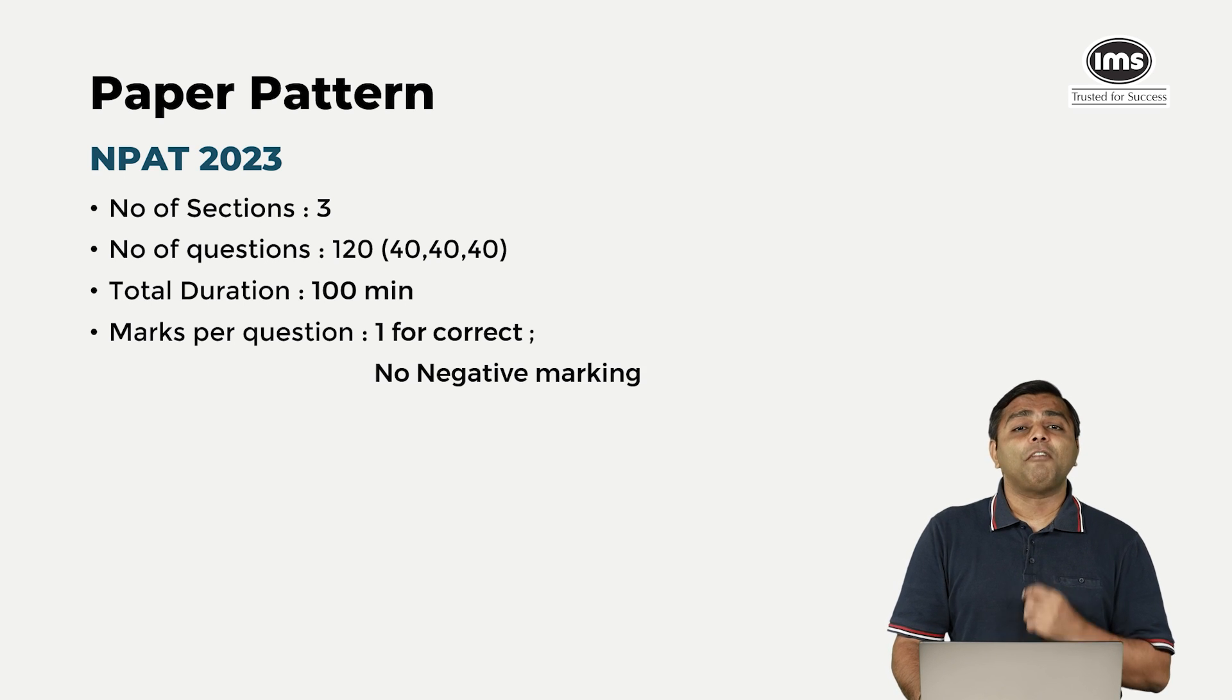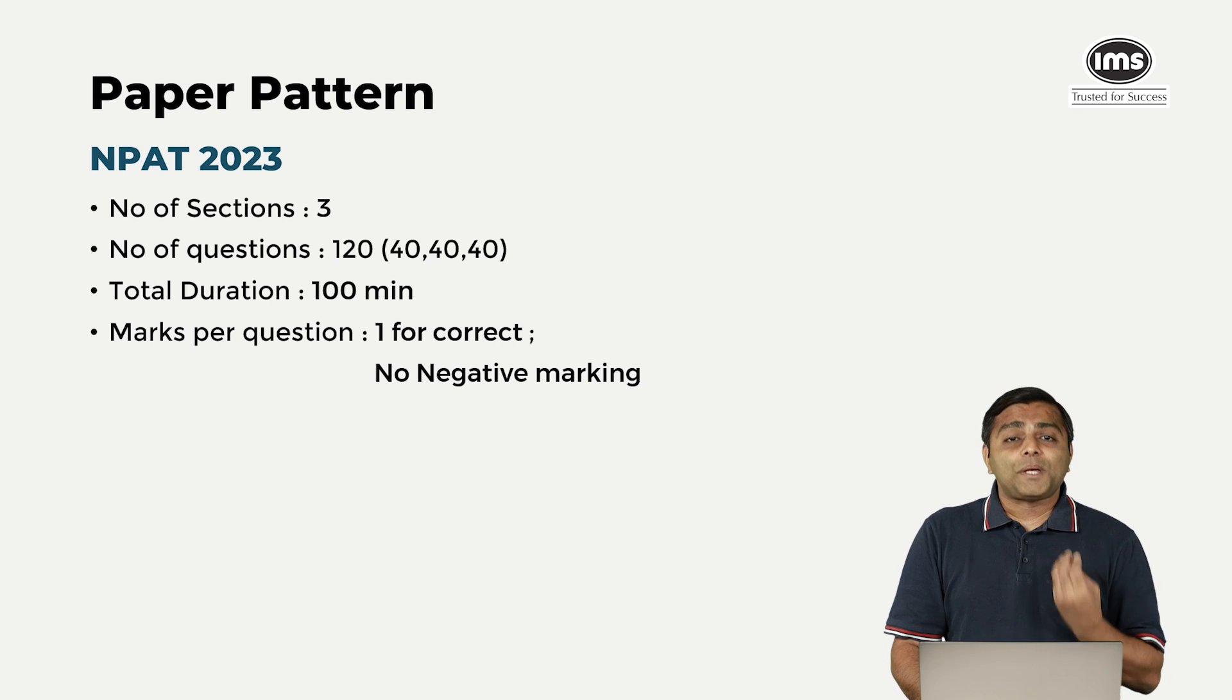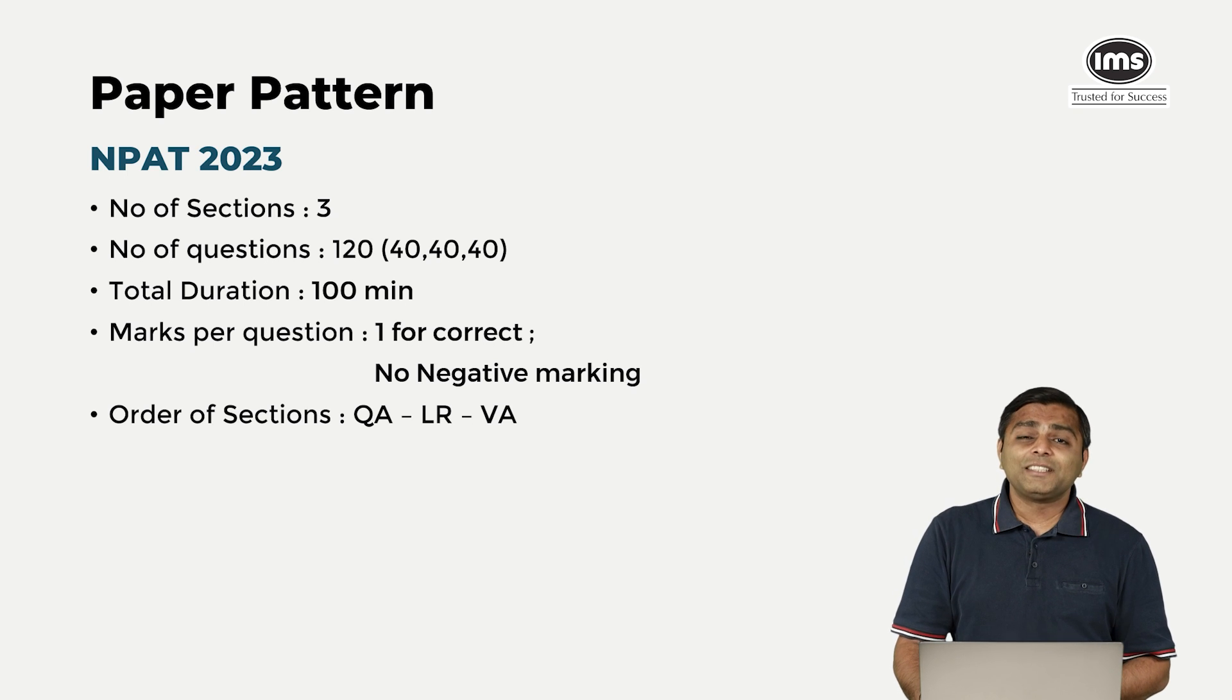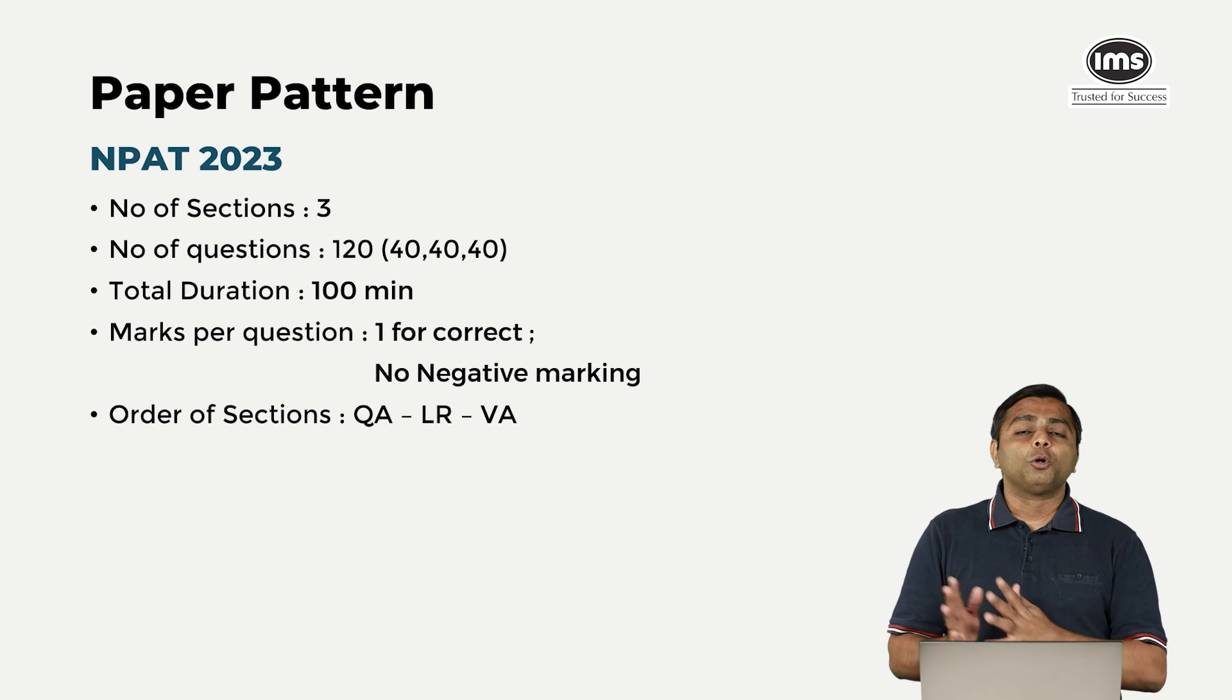Marks per question: one mark for every correct answer that you give and no negative marking, that's correct. So this shifts a lot for your strategy when you are actually taking the paper. There is no question of leaving a question unattempted. Order of the sections this year has been fixed: you start with quant, then go to logic, and finally verbal. No calculators are allowed in the exam.